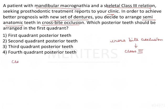Class 1 is the normal teeth arrangement that we have all done in preclinical exercises in conventional patients — with the molar relation, overbite, overjet, everything. This is conventional. Class 2 could be because the maxilla is bigger than the mandible or the mandible is smaller than the maxilla.